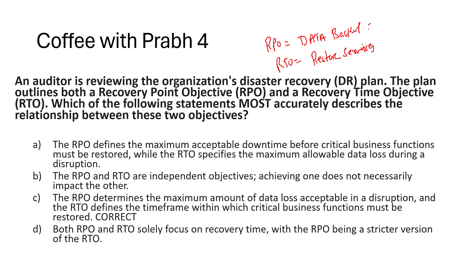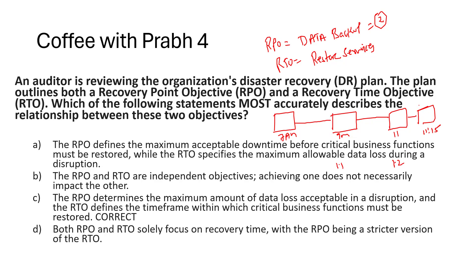Here's an example: with an RPO of 2 hours, a server starts at 7 a.m. and runs till 9 a.m., when the first backup (1.1) is taken. The next backup is scheduled at 11 a.m. (1.2). But at 11:15, the server goes down. With an RTO of 3 hours, we must restore by 1 p.m. The last data we can restore is from backup 1.2 at 11 a.m. So the maximum data lost is 15 minutes, well within the agreed 2-hour RPO.